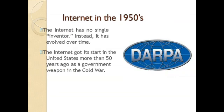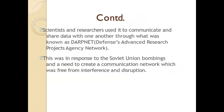The internet has no single inventor; instead it has evolved over time. The internet got its start in the United States more than 50 years ago as a government weapon in the Cold War. Scientists and researchers used it to communicate and share data through what was known as DARPANET — the Defense Advanced Research Projects Agency Network. This was the first internet, originating in the mid-1950s, in response to Soviet threats and the need to create a communication network free from interference and disruption.